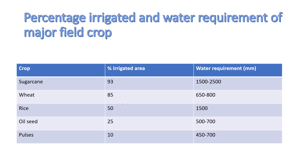A table of percentage irrigated area and water requirement of major field crops is provided. Sugarcane: 93% irrigated area, water requirement 1500–2500 mm. Wheat: 85% irrigated area, water requirement 650–800 mm. Rice: 50% irrigated area, water requirement 1500 mm. Oilseeds: 25% irrigated area, water requirement 500–700 mm. Pulses: 10% irrigated area, water requirement 450–700 mm.